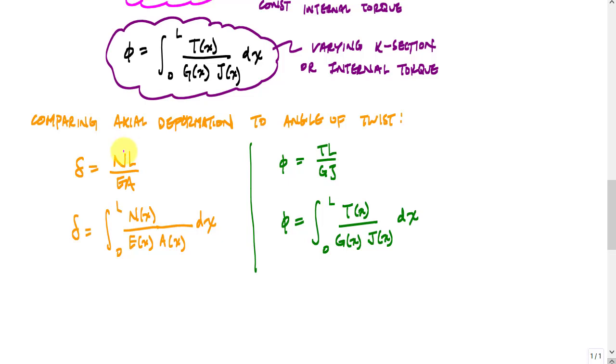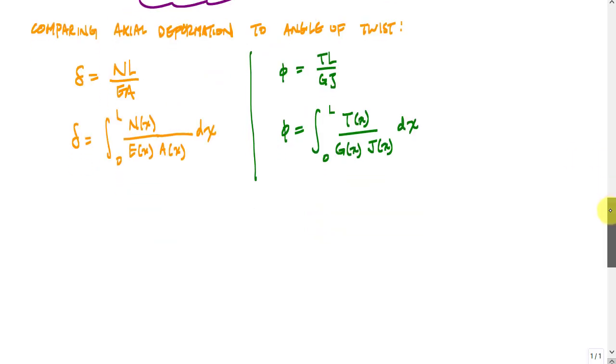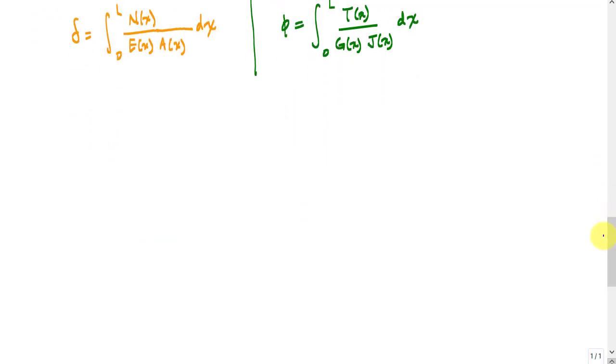All right, so you can see the analogy between the axial deformation and the angle of twist. We've got internal load to internal load, length to length, modulus to modulus, area to polar moment of inertia. And you can also see the same thing with the integral formulation when you have varying cross sectional area or loading or internal loading. The process for solving problems with angle of twist is also very similar to axial deformation. And so if you feel good with axial deformation, you're going to be good with angle of twist.